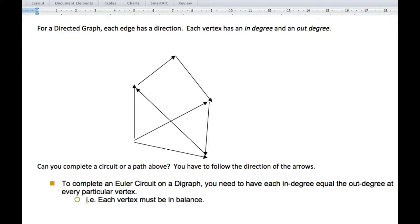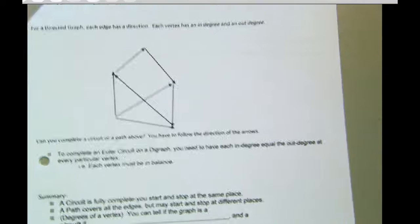Moving on to the directed graph. With the directed graph, each edge has a direction. And each vertex has what we call an in-degree and an out-degree, and that's because we do have an arrow. So if I look at this figure right here, I can go to each one.